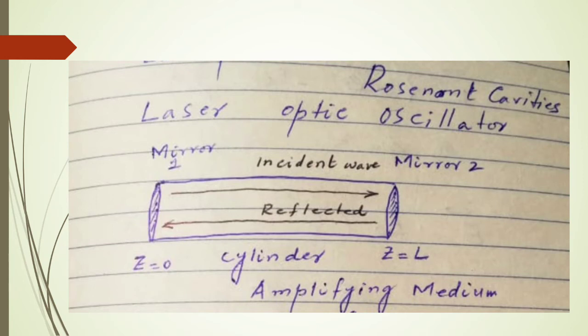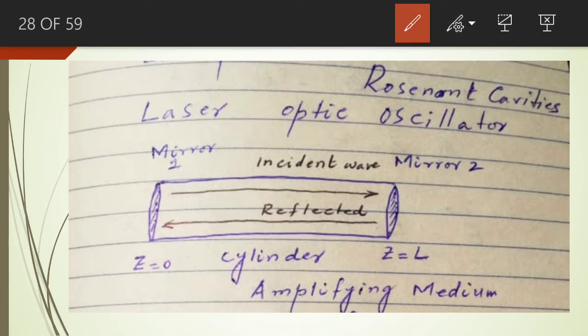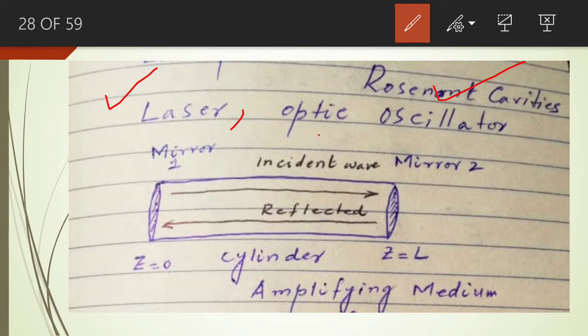Today we are going to discuss the resonant cavity, also known as laser or optic oscillator. We are going to talk about the construction of the resonant cavity and the amplification of the light signal that takes place inside it. This resonant cavity is also known as laser, and we will be talking about the structure of the laser and the amplification of the light signal.